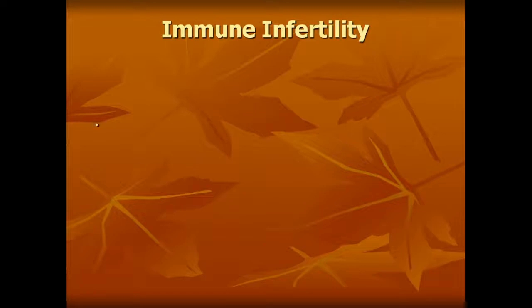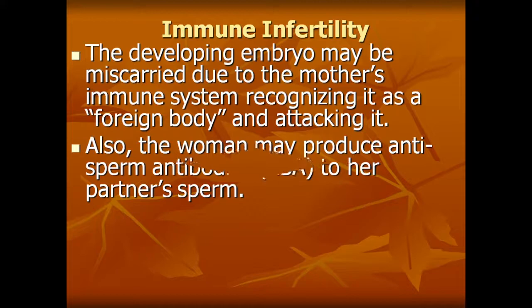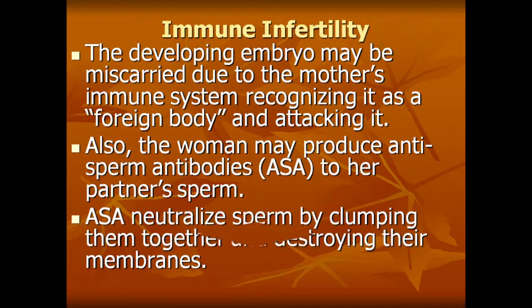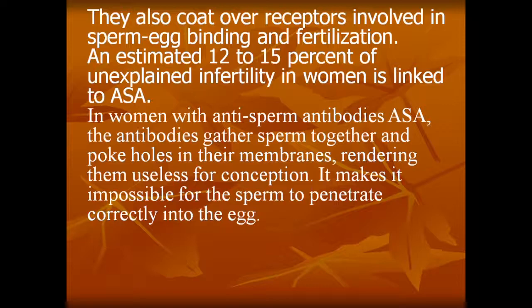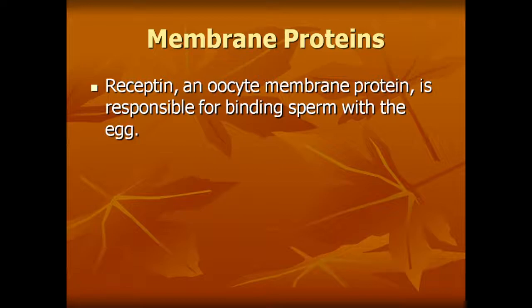Immune infertility: the developing embryo may be miscarried because the mother's immune system recognizes it as a foreign body and attacks it. A woman may also produce anti-sperm antibodies to her partner's sperm, neutralizing the sperm by clumping them together, destroying their membranes. These antibodies also cover the receptors involved in sperm-egg binding and fertilization. An estimated 12 to 15 percent of unexplained infertility in women is linked with anti-sperm antibodies. Membrane proteins responsible for binding the sperm with the egg — if this protein is not receptive or present, fertilization cannot occur.